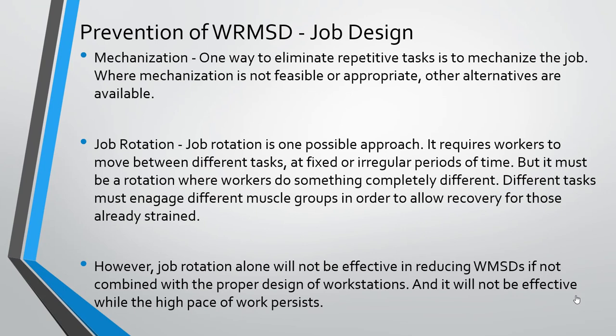Prevention of work-related musculoskeletal disorder by job design starts with mechanization — one of the ways to eliminate repetitive tasks. Where mechanization is not feasible, alternatives such as job rotation are used. Job rotation requires workers to move between different tasks at fixed or irregular periods of time, but it must involve something completely different, engaging different muscle groups to allow recovery for already-strained muscles. However, job rotation alone will not be effective unless combined with proper design of work stations, and it will not be effective if the work or repetition rate is high.